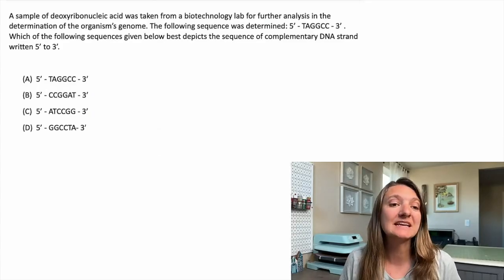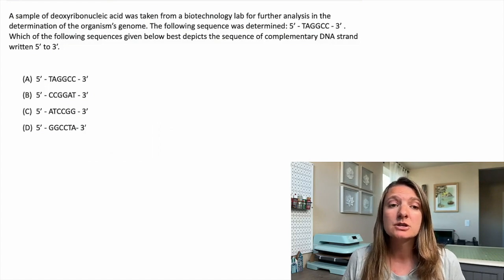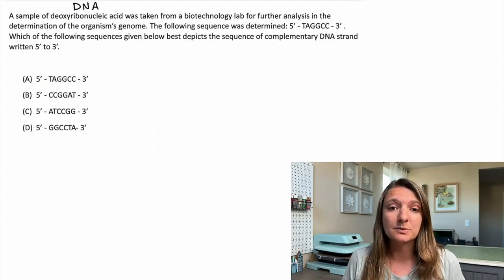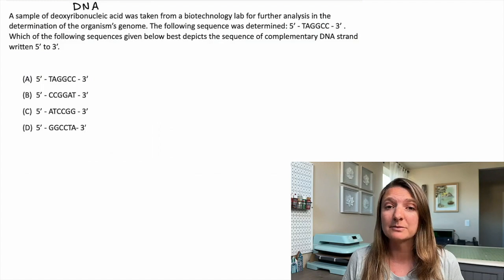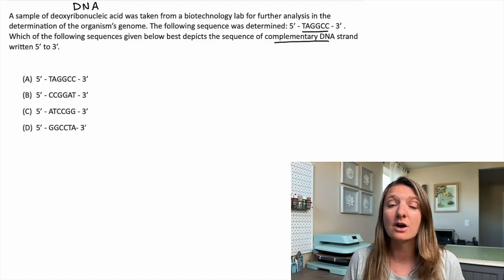On to our next problem. A sample of deoxyribonucleic acid was taken from a biotechnology lab for further analysis in the determination of an organism's genome. Just a reminder that deoxyribonucleic acid is DNA. The following sequence was determined five prime to three prime: TAGGC — that's thymine, adenine, guanine, guanine, cytosine, cytosine. Which of the following sequences best depicts the complementary DNA strand written five prime to three prime?